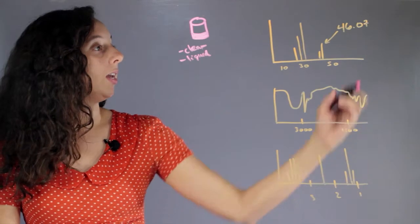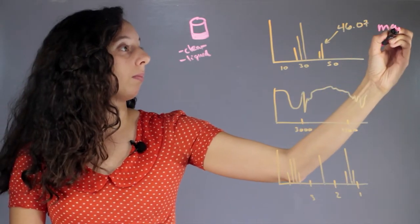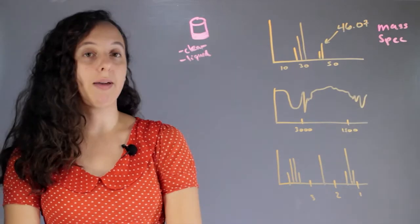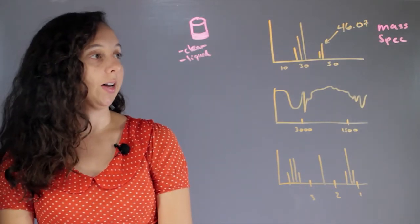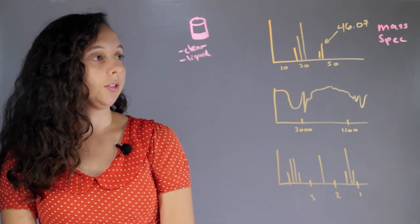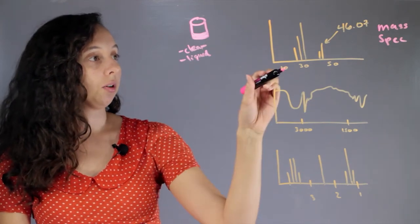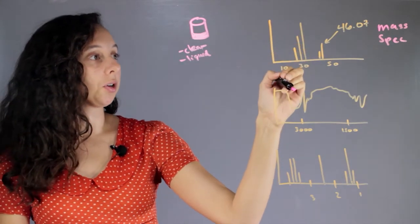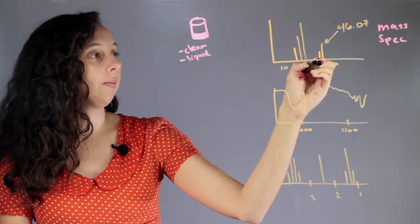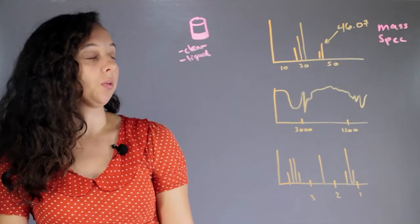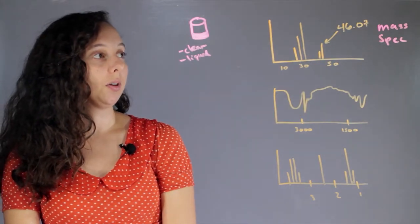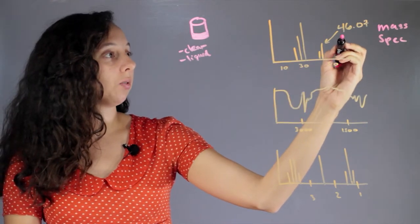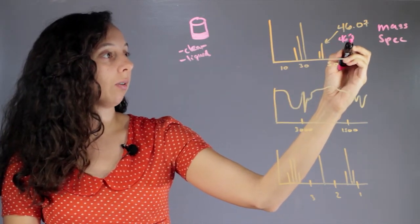Test number one we can run is mass spec. This will tell us the mass of our overall compound. What it does is it bombards your molecule and it breaks apart, and all these are different little fragments of your molecule. But the one that's right here is the biggest fragment and this will also tell you what the molar mass of your compound is. Now we know that it's 46 grams per mole.